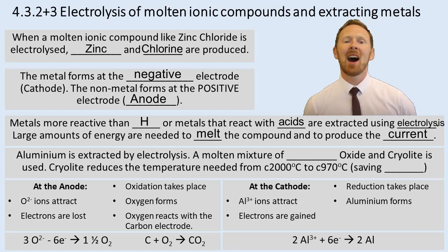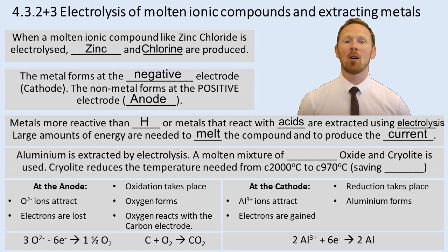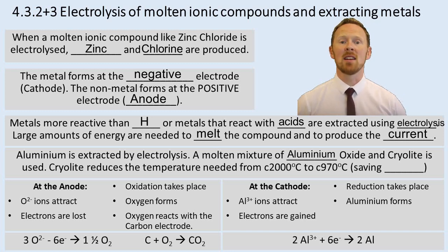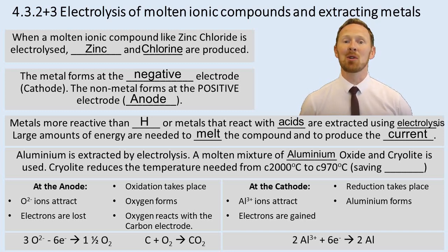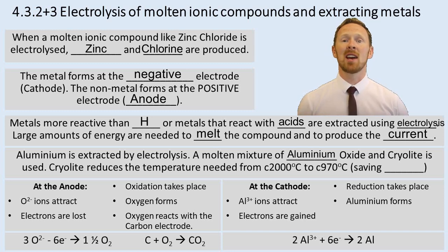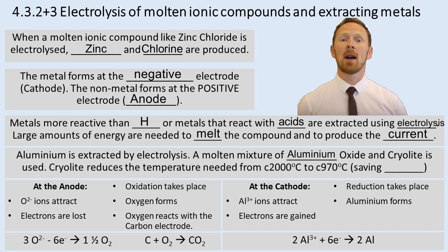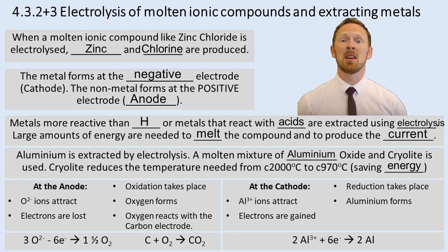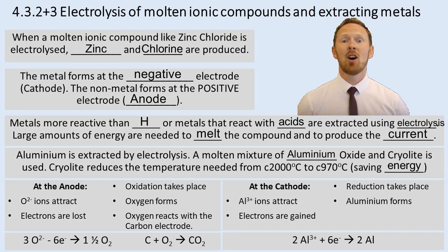Aluminium is extracted by electrolysis. A molten mixture of aluminium oxide and cryolite is used. Cryolite reduces the temperature needed — instead of melting aluminium oxide at around 2000°C, dissolving it in molten cryolite only requires 970°C. This saves energy, reduces the amount of fossil fuels burnt, and therefore has a positive impact on global warming.